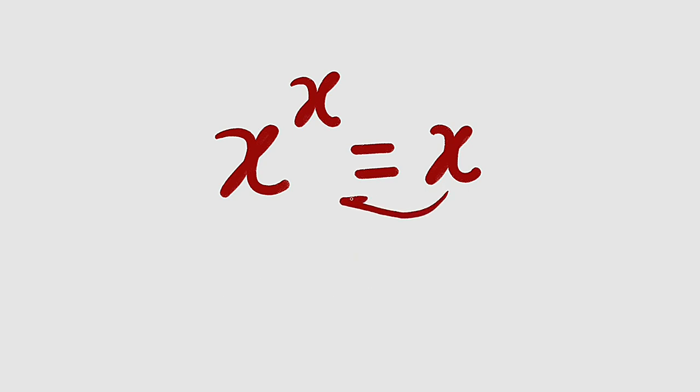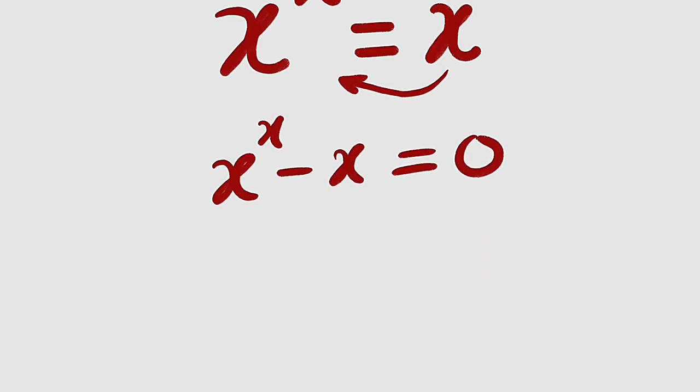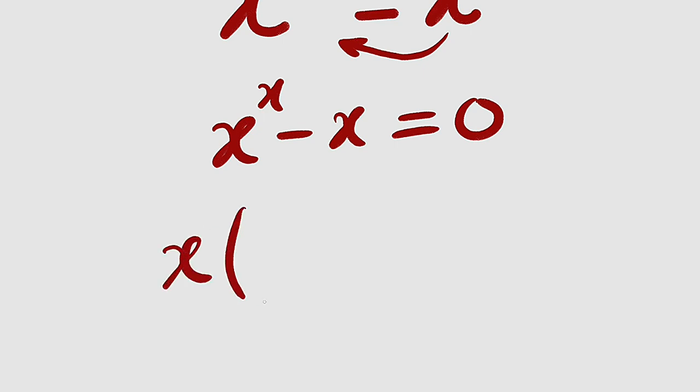First of all, bring x to the left hand side. We have x raised to the power of x minus x. This is equal to 0. The left hand side can be factorized. Let us bring x outside. Then inside you have this divided by this.